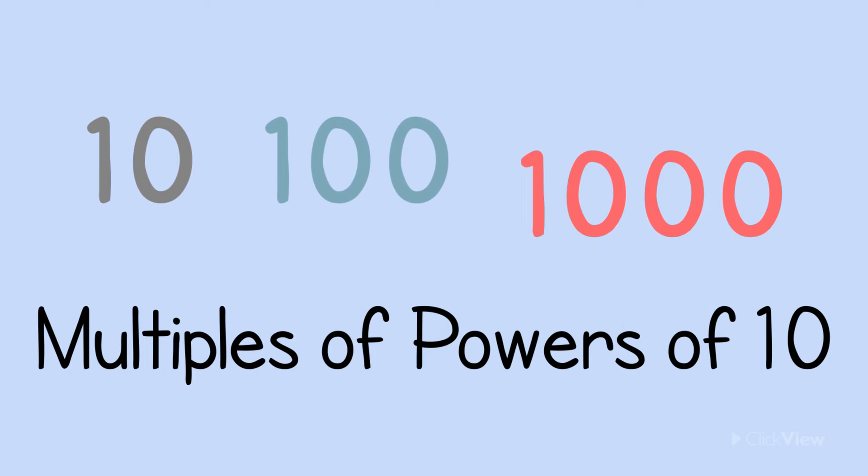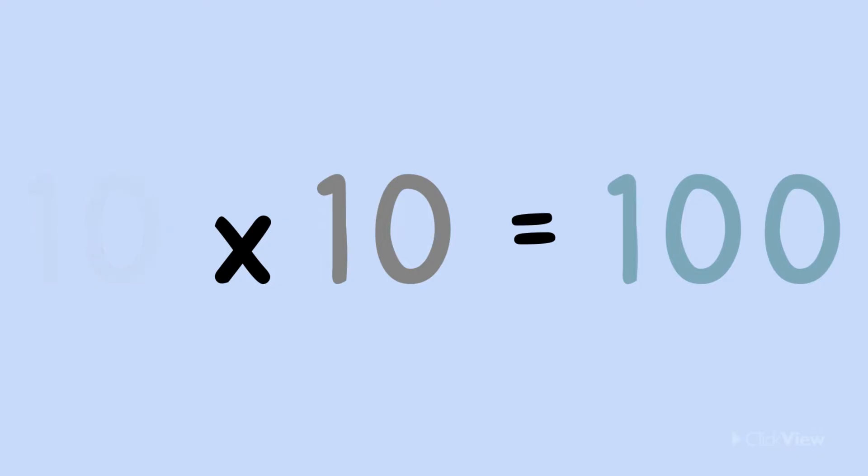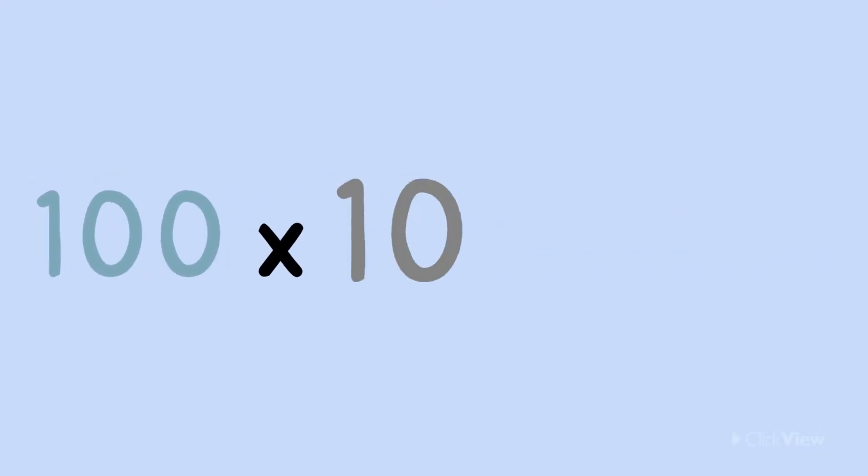10, 100, and 1000 are all examples of multiples of powers of 10. We can multiply the number 10 by 10, which we know is 100. We can then multiply 100 by 10, which is 1000. Did you know that we can also multiply this number by 10?